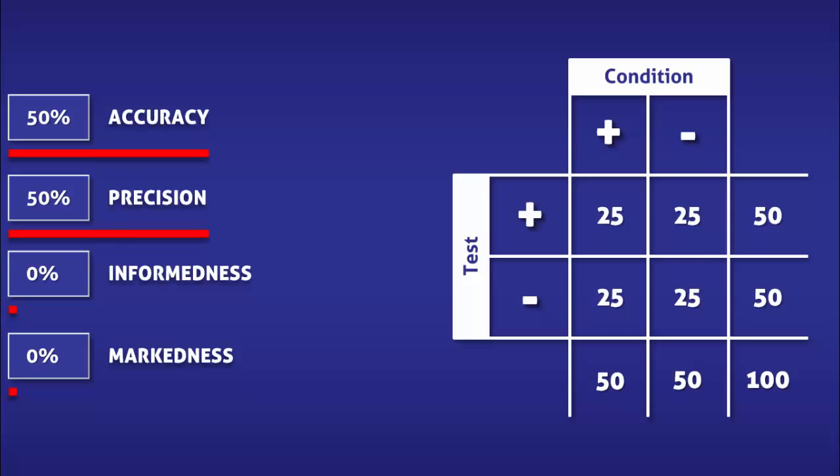A test with this level of performance would essentially be a guess, like a coin toss, which only has a 50% chance of being correct. Despite only being a guess, the precision of this test would actually be high if it was performed in a group of people with a high prevalence of the condition.